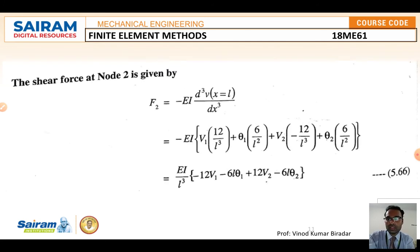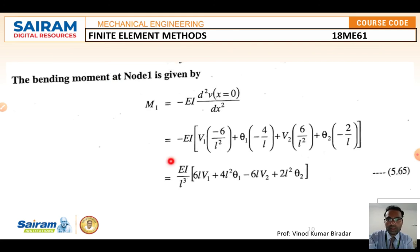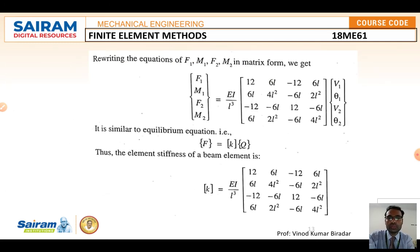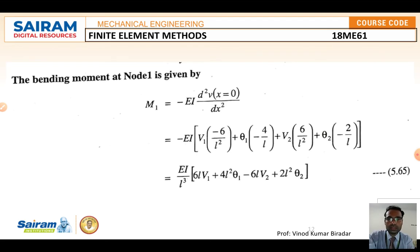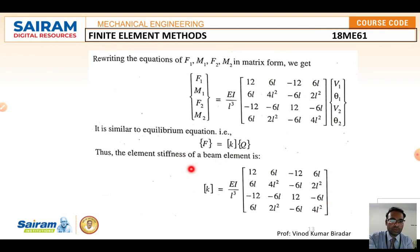Writing the equations for F₁, M₁, F₂, M₂ in matrix form gives: {F} = [K]{q}, where the element stiffness matrix K = (EI/L³) multiplied by the 4×4 matrix. This is the element stiffness matrix for the beam element. Comparing with the equilibrium condition F = K·q confirms this structure.